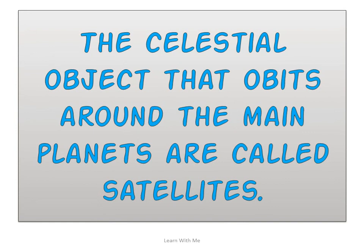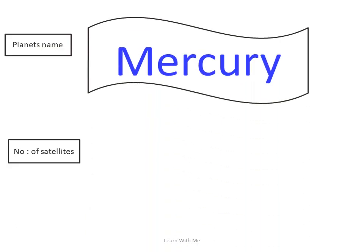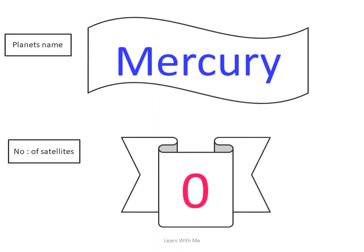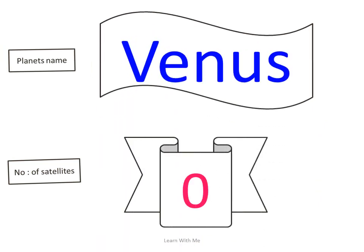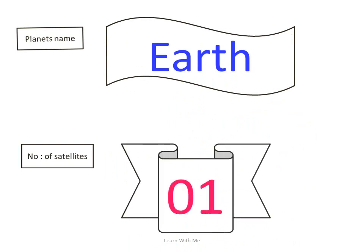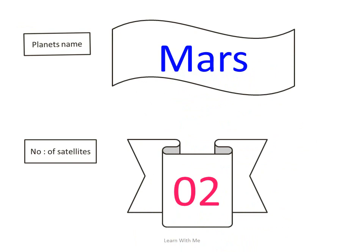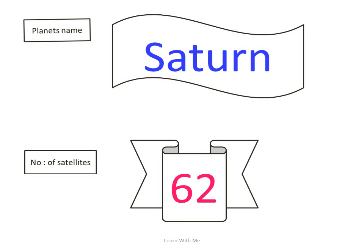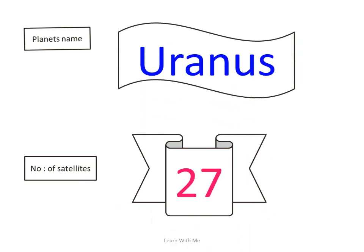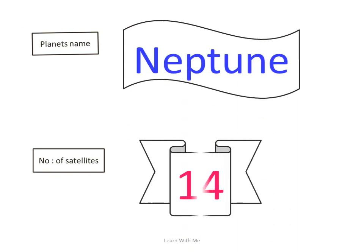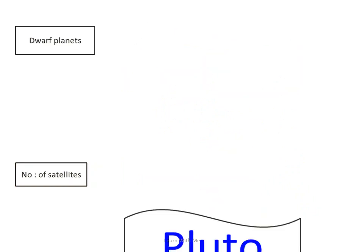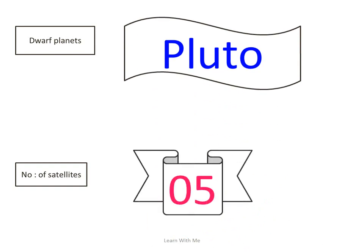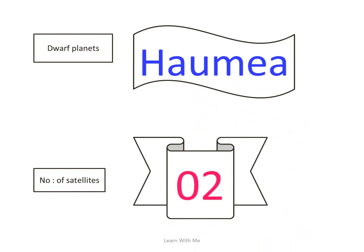Natural satellites are celestial objects that orbit around the main planets. Mercury has no satellites. Earth has one satellite. Mars has two satellites. Saturn has 62 natural satellites. Uranus has 27 satellites. Neptune has 14 natural satellites. Pluto has five natural satellites. Haumea has two natural satellites.